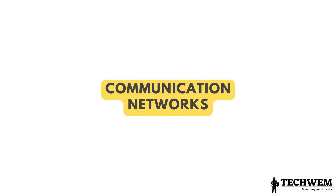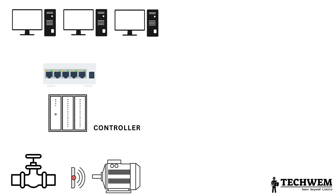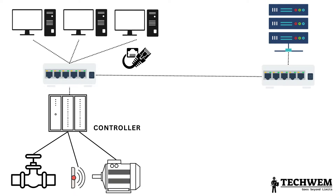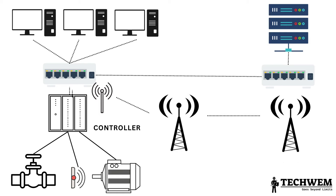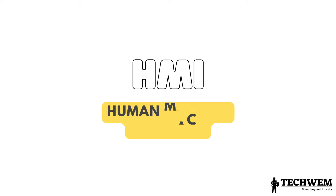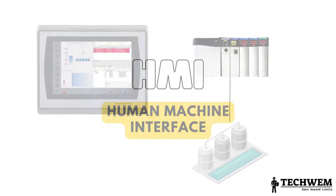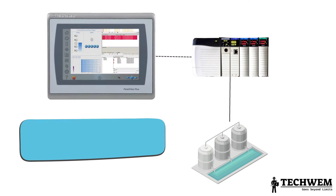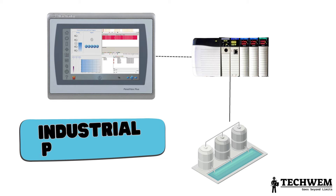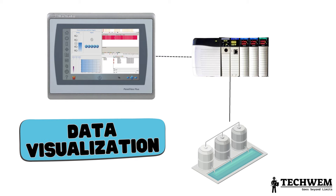Communication networks facilitate the exchange of data and commands between different components of an ICS. These networks can be wired, such as Ethernet or Fieldbus, or wireless, such as Wi-Fi or cellular networks. They enable sensors, controllers and other devices to transmit and receive data in real time, forming a networked infrastructure for control and monitoring. The HMI is the interface through which human operators interact with the ICS. It provides a graphical representation of the industrial processes, real-time data visualization and control options.